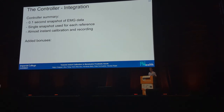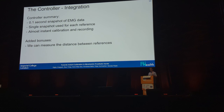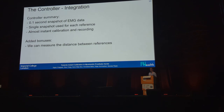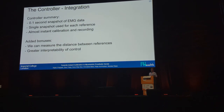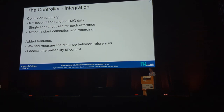There are some added bonuses to all of this. Because we have the distance, we can look at the distance between references — so when you're recording actions for your library, we can identify if one is too close to another, like your tripod grasp being too close to your pinch grasp, meaning you might need to change how you do that. It's useful for rehabilitation purposes and gives us greater interpretability of control — if something's going wrong, we can identify specifically what the issue is.